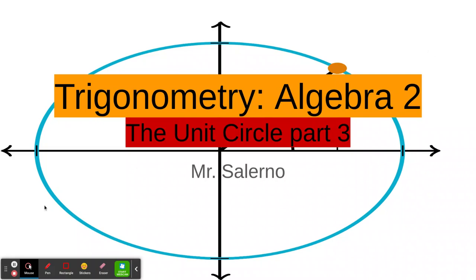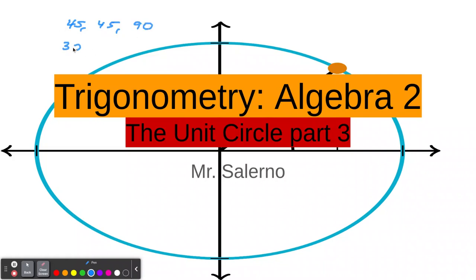For this video, we should make sure we have our pen ready. We should know about the 45-45-90 triangle, which I'll go over in this video. And of course, there's the 30-60-90 triangle. So we'll go over these two, and then we'll put them in the unit circle.